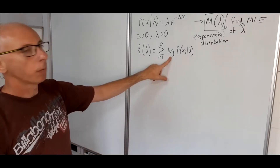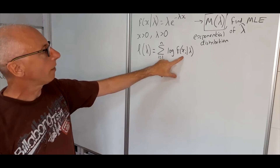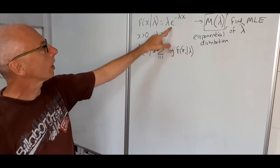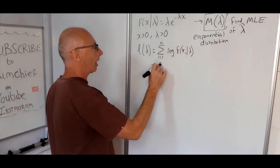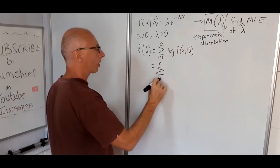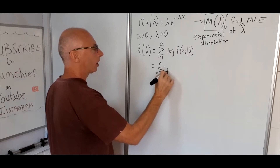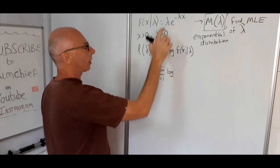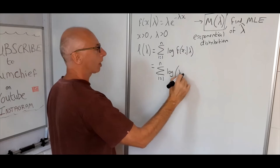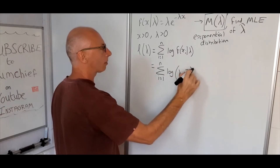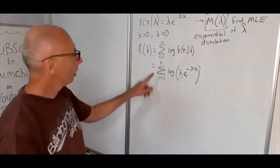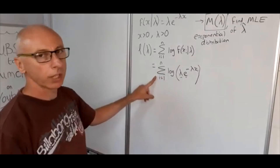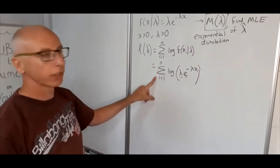Now we substitute the PDF f(x | lambda) into the expression. So that equals the sum from i = 1 to n of log(lambda * e^(-lambda * x_i)). Now we're going to take the log of this, also considering the summation.